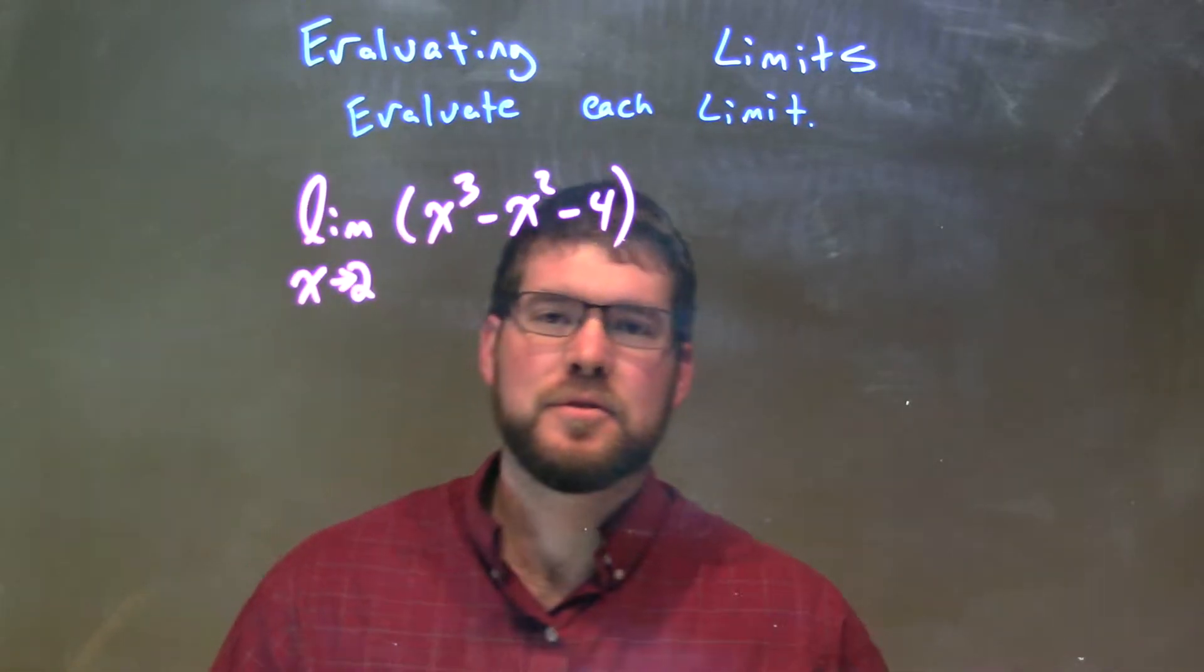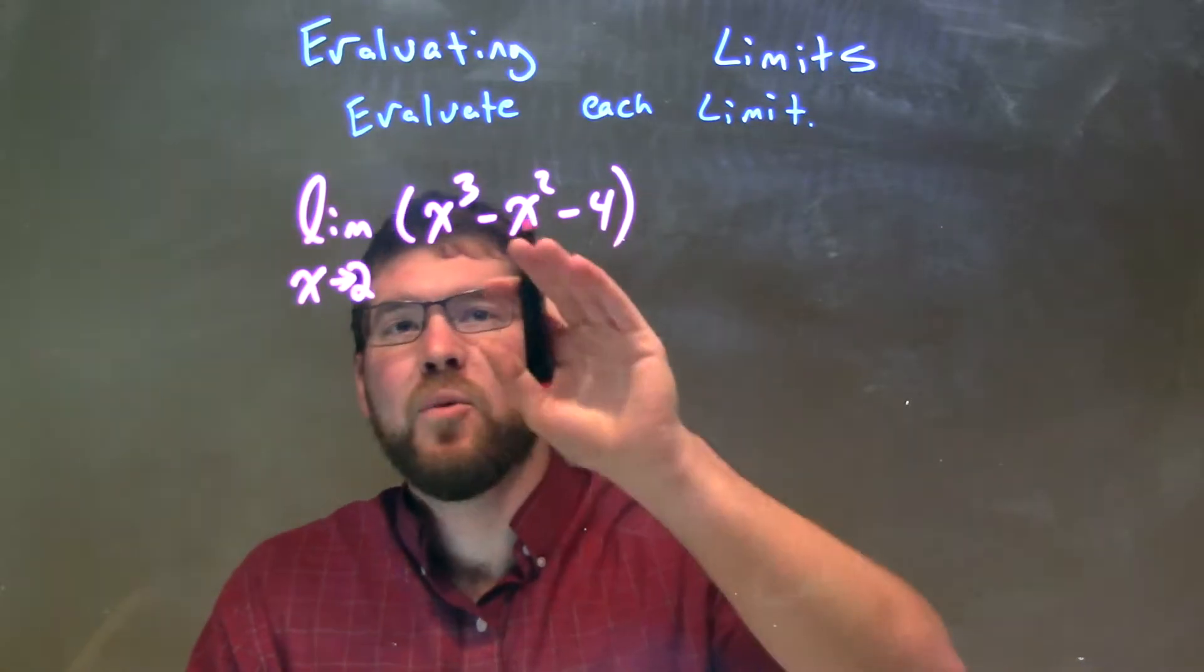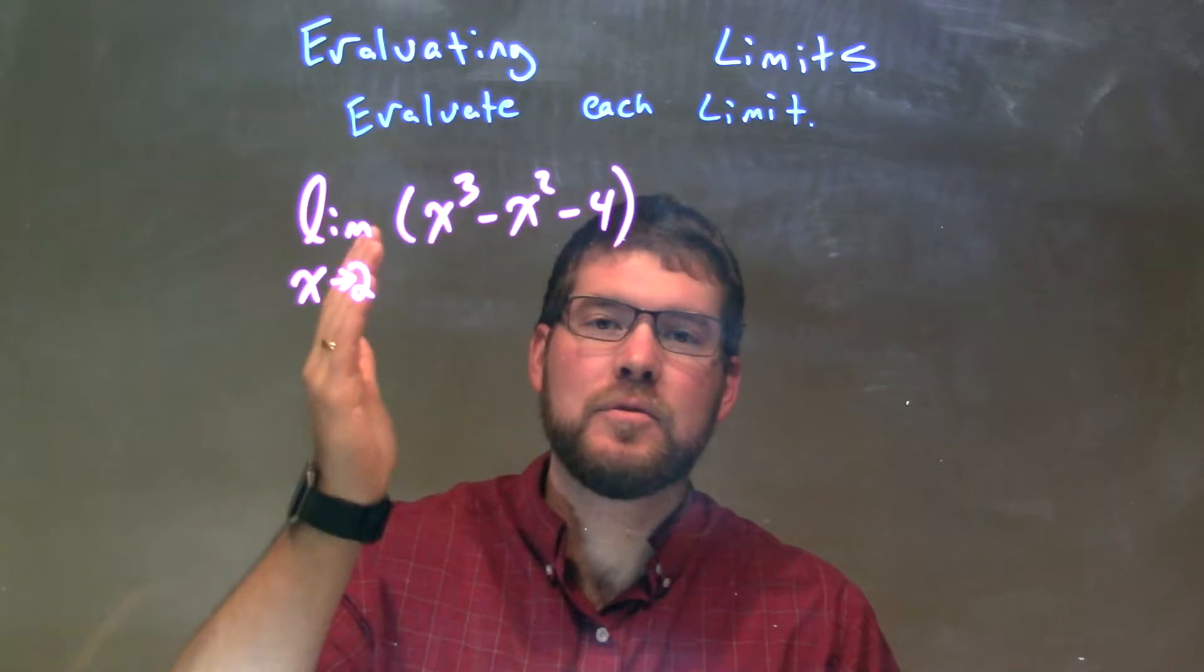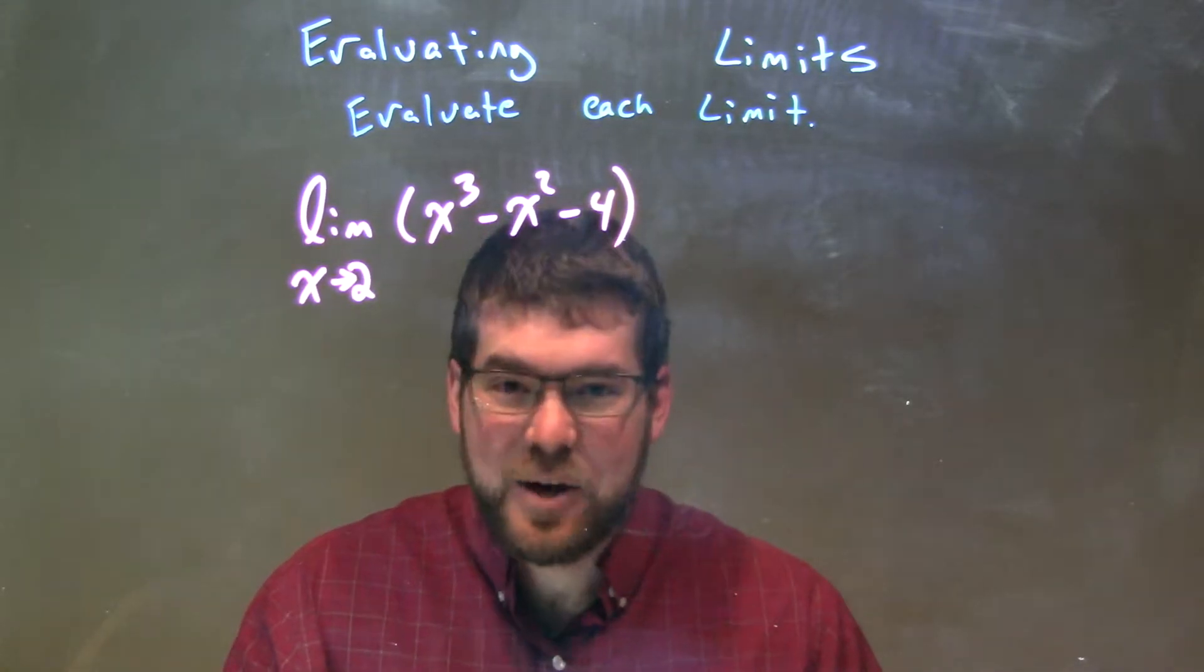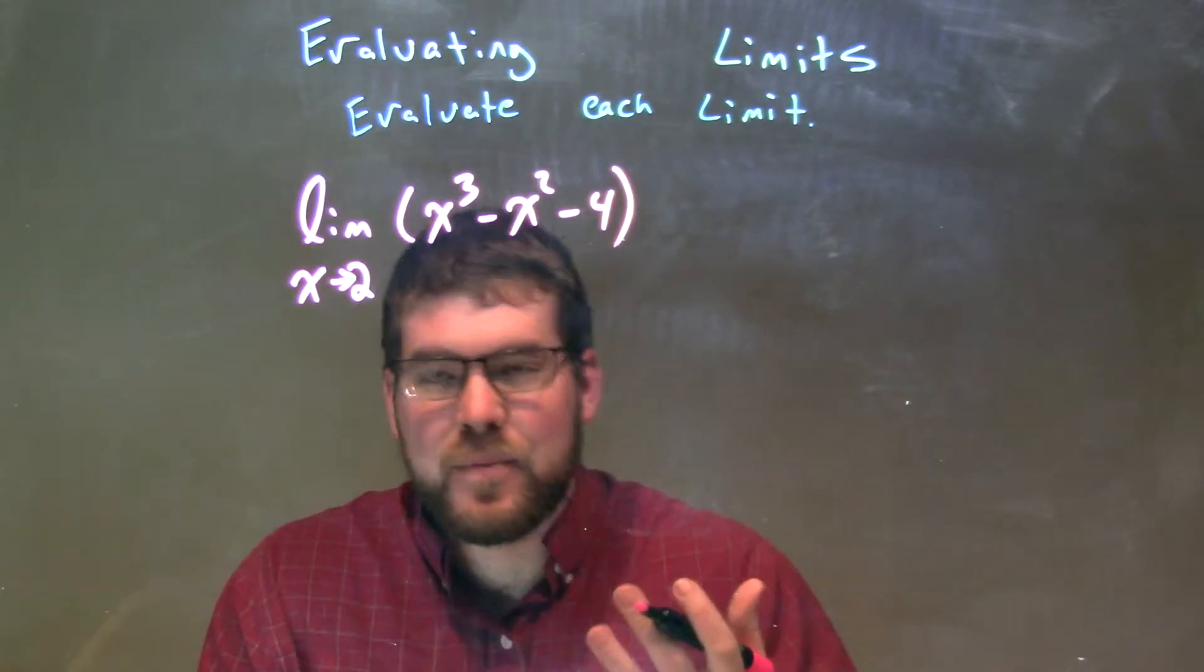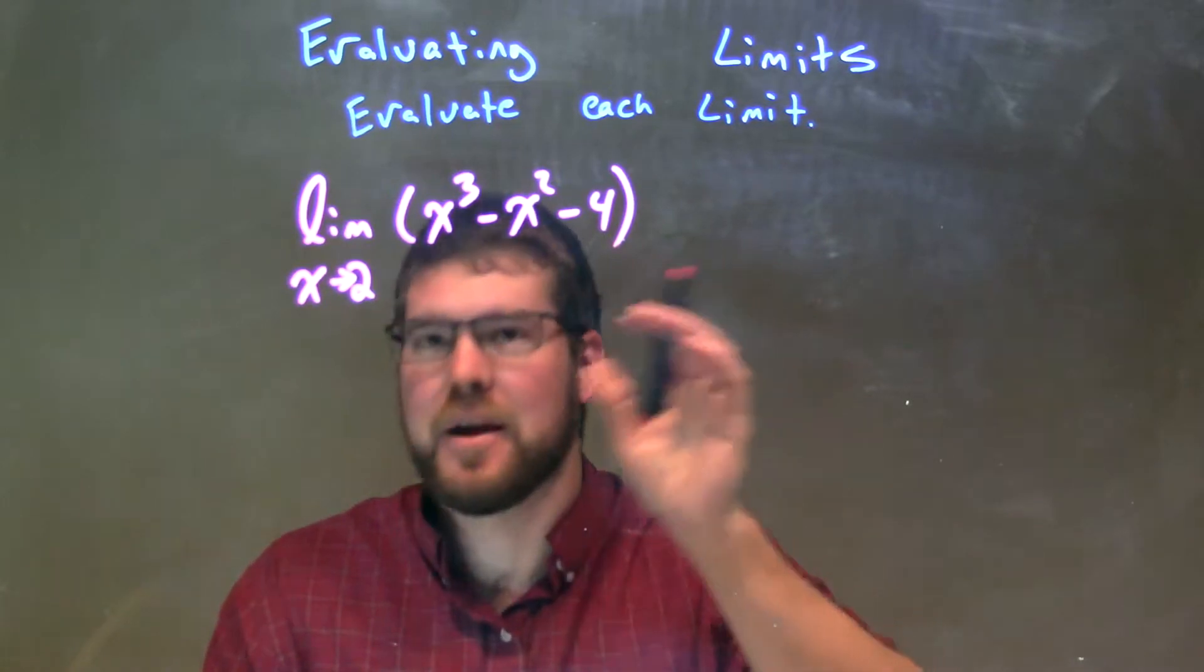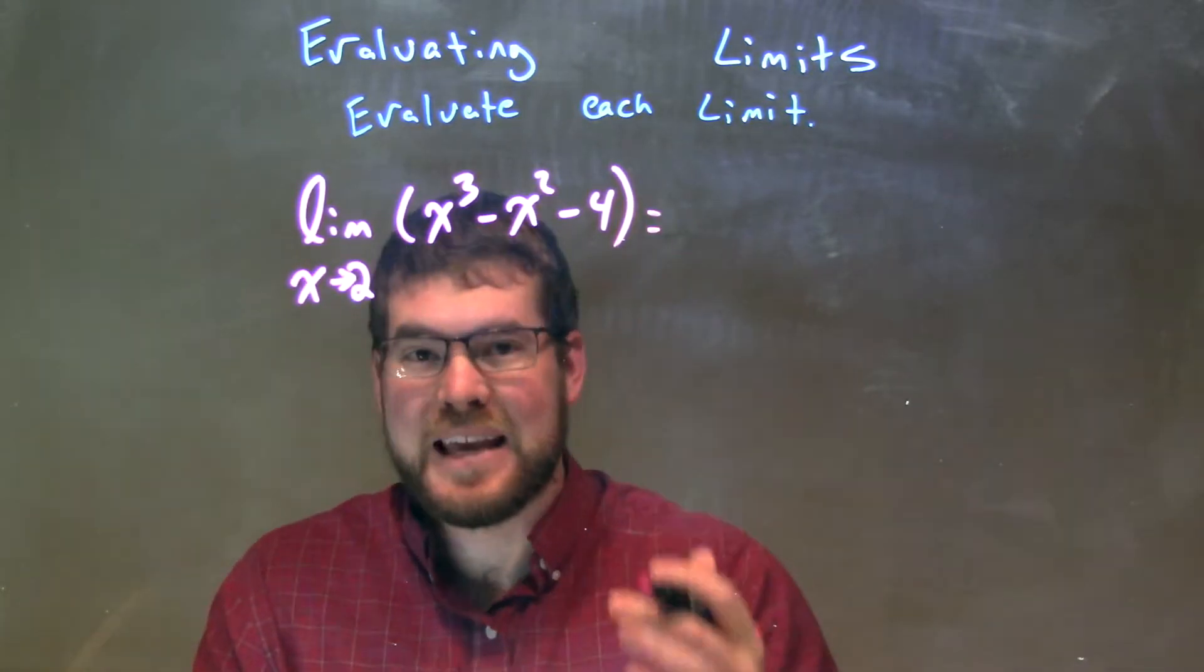Well, the limit as x approaches 2 of this polynomial, x³ - x² - 4. Since it is a polynomial, we can directly substitute 2 in for x at that value. So the limit is going to equal plugging it into the equation, or function. Since we can do that...